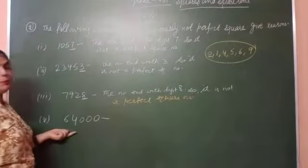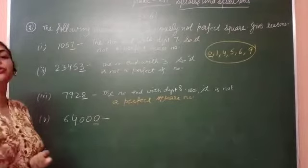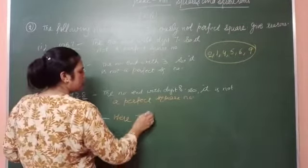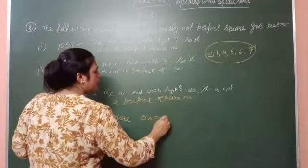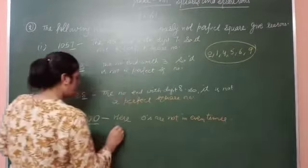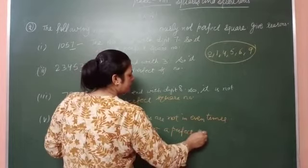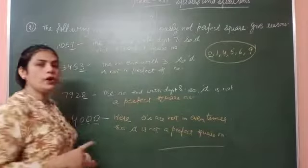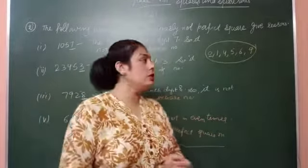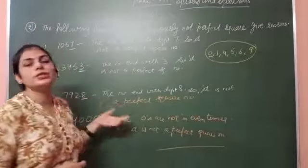Next, this number ends with 0. When the number ends with 0, it could be a perfect square, but the condition is that the zeros must appear an even number of times — they must come in pairs. Here the number of zeros is 1, 2, and 3. The zeros are not in pairs; they are not an even number of times. So it is not a perfect square number. Clear? So numbers ending with 0, 1, 4, 5, 6, 9 are perfect square numbers, and the zeros must also come an even number of times. Here 0 is coming, but not an even number of times, so it is not a perfect square number.